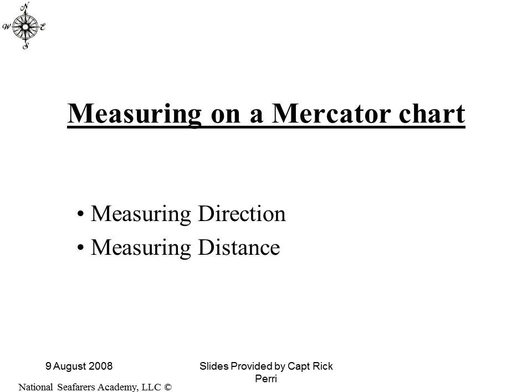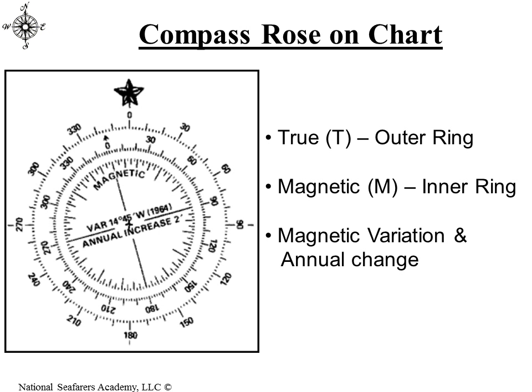A quick review of how we measure things in our Mercator projection or Mercator chart. We need to be able to measure direction and distance. When we measure angles, we can use the compass rose that's printed on the chart. The outer ring is always referenced to true north — that's the true outer ring. The inner ring is always referenced to magnetic north, and we're never going to use that one.